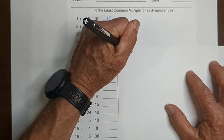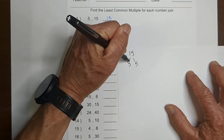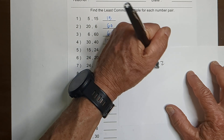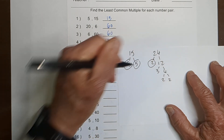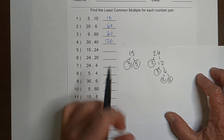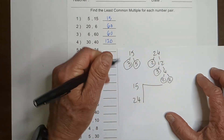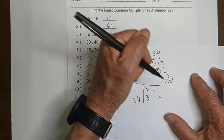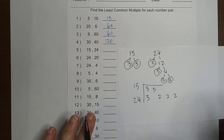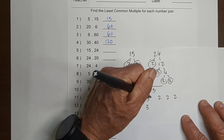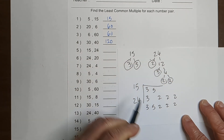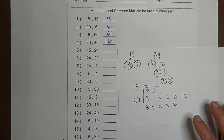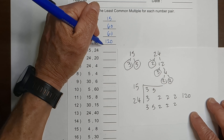For this next one, I think I'll go factor tree again. 15 is 3 times 5 — they're both prime. And then 24: we've got 2 times 12, then 3 times 4, and 2 times 2. The 3 is prime and the 2s are prime. Now let's put 15 and 24 in the chart. We've got 3 and 5 for 15, and then 3, 2, 2, and 2 for 24. Bring them down — remember, if you have more than one, just bring one digit down. So we have 3, 5, 2, 2, and 2. That's 15 times 2 is 30, 30 times 2 is 60, 60 times 2 is 120. So for 15 and 24, the least common multiple is 120.